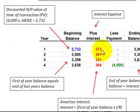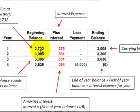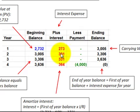Now we have to determine our interest expense for each of the next four years. We start with a beginning balance of $2,732 — the discounted notes payable value at the beginning of year one, its present value. Then we take 10% times the beginning balance, giving an interest expense of $273 for year one. We add that to the beginning balance to get an ending balance of $3,005, which is our carrying value. That ending balance becomes the beginning balance of year two: $3,005 times 10% gives interest expense of $301, and an ending balance of $3,306.